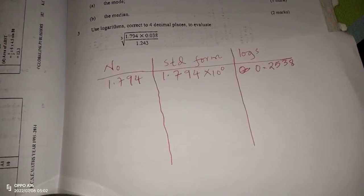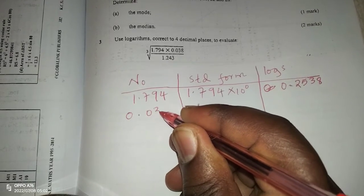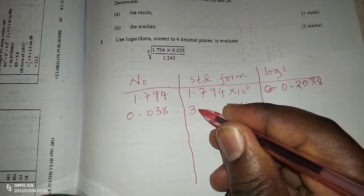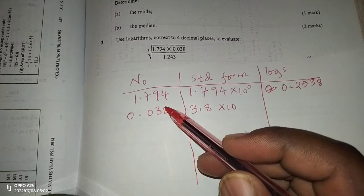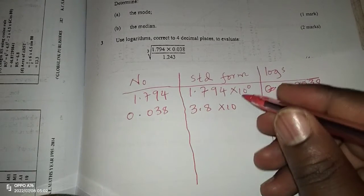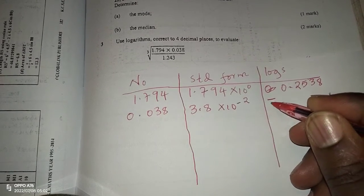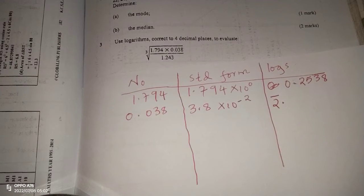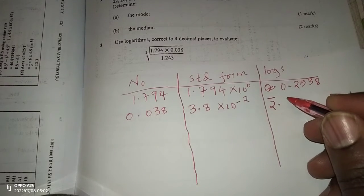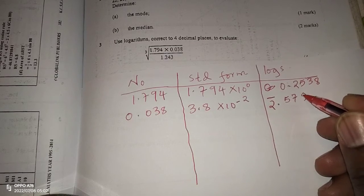So now the next number is 0.038, which is 3.8 multiplied by, in the standard form, we have 1, 2 steps to the right, which means we will have negative 2. This means we will have bar 2 as the logarithm. Then we read the log of 3.8. The log of 3.8 is 0.5798.